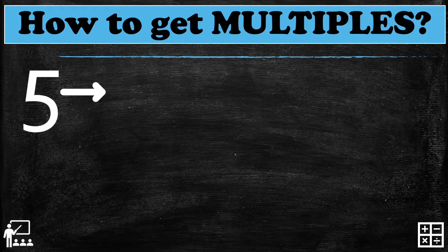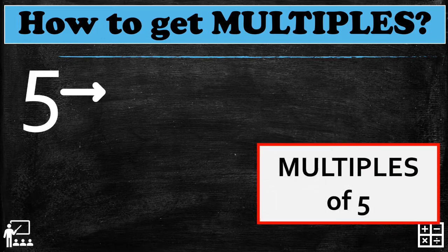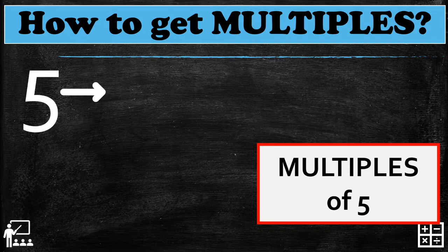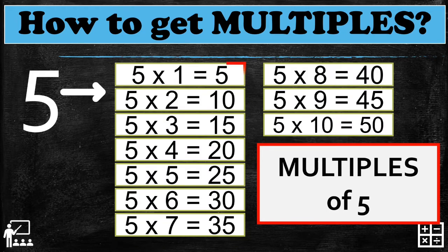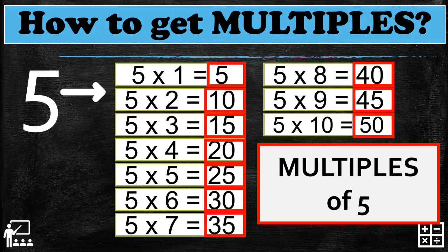Let's try another — this time I have five. I know in your mind it's very easy. Can you answer in your mind what are the multiples of five? Three seconds... The multiples of five are: five, ten, fifteen, twenty, twenty-five, thirty, thirty-five, and so on. These are the multiples of five.